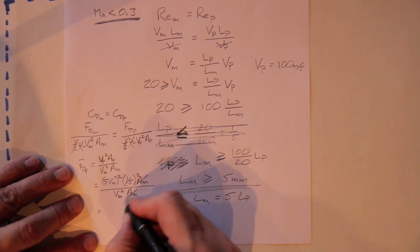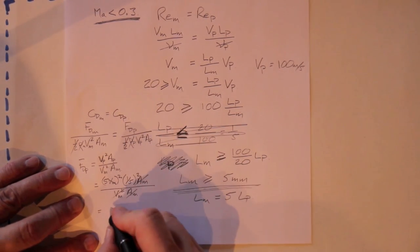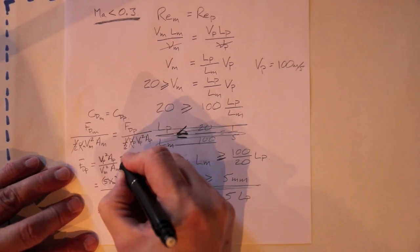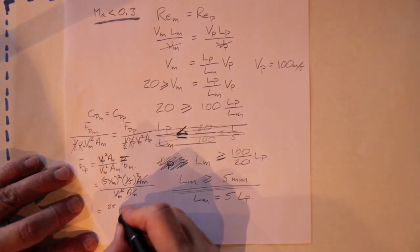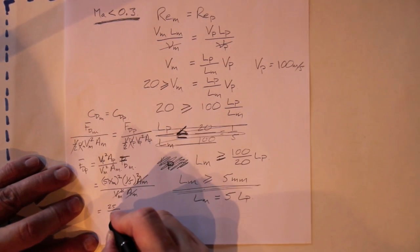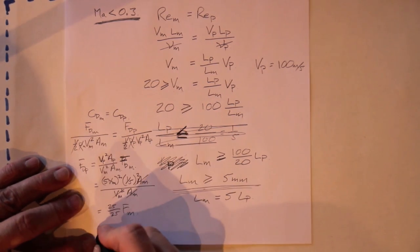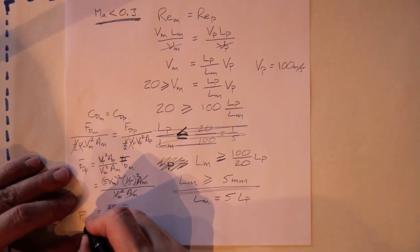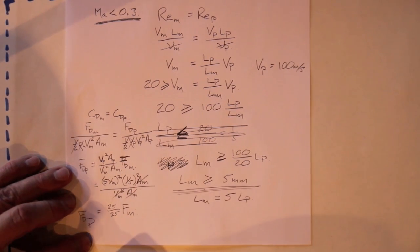The V_m squared and A_m terms cancel out, and we're left with 25 over 25, so the force of drag on the prototype will be equal to the force of drag on the model.